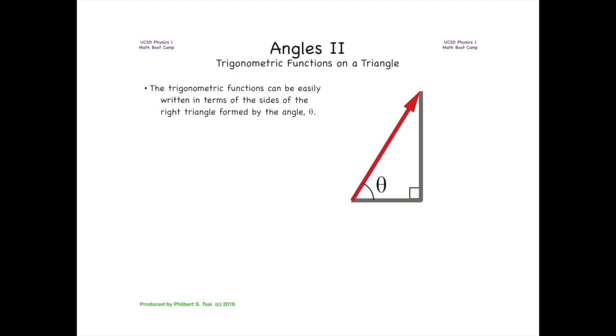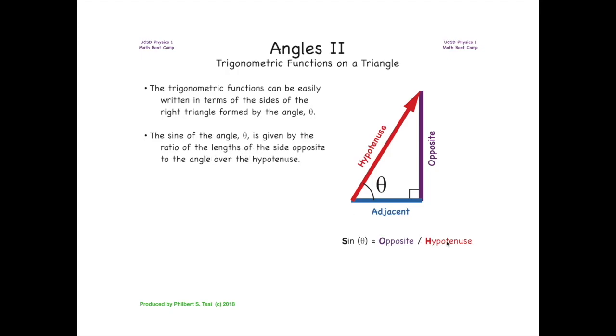From this you can see that the trigonometric functions sine, cosine, tangent can be written in terms of the sides of a right triangle formed with the angle theta. We can refer to the side of the triangle that is opposite the angle, and of course the slanted side of the right triangle is called the hypotenuse.